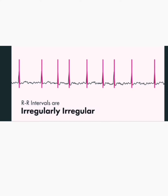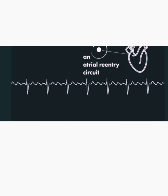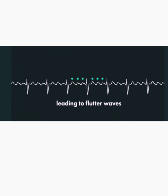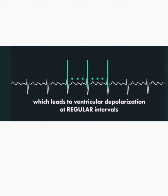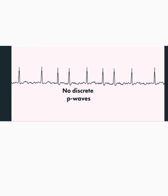The regularity of atrial flutter comes from an atrial reentry circuit, leading to flutter waves representing atrial depolarization, which in turn leads to ventricular depolarization at regular intervals. There are no discrete P waves in atrial fibrillation.